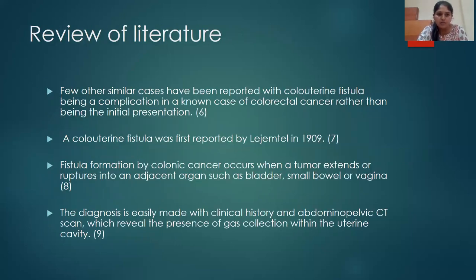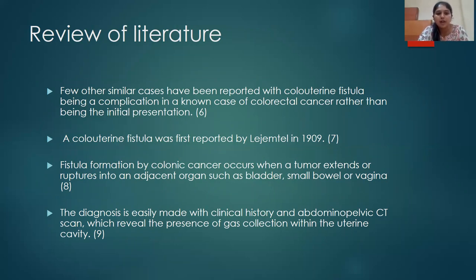So what do we have in the literature? There are very few similar cases of colorectal uterine fistula, mostly secondary to diverticulitis or as a complication in known cases of colorectal cancer. But in our case, it was the initial presentation. A colorectal uterine fistula was first reported by Legendel in 1909. Fistula formation by colonic cancer occurs when a tumor extends or ruptures into an adjacent organ such as the bladder, small bowel, or vagina. The diagnosis is easily made with clinical history and abdominal pelvic CT scan, which reveals the presence of gas collection within the uterine cavity.